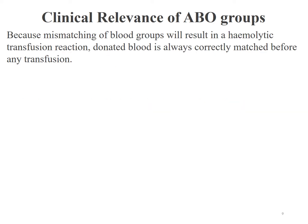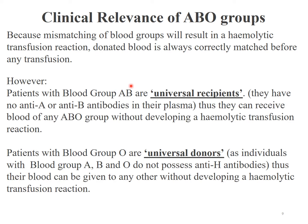The clinical relevance of the ABO blood group is that blood transfusion must be performed with great care to avoid hemolytic transfusion reaction. Persons with blood group AB are universal recipients, meaning they can receive blood from anyone. Patients with blood group O are universal donors, meaning their blood can be donated to anyone, because blood groups A, B, and O do not possess antibodies against the H antigen, which is present in all blood groups.